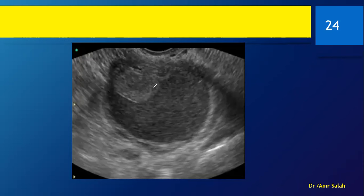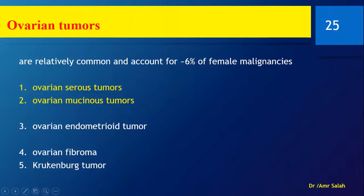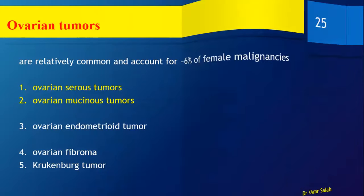Here is another lesion that looks like an endometrioma, but it does have vascularity inside.